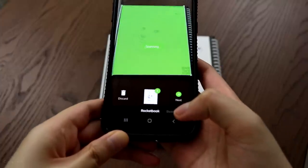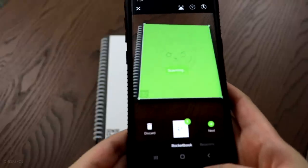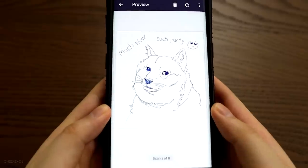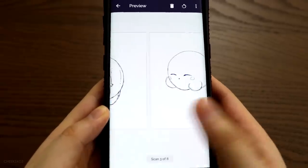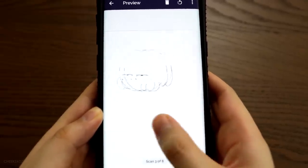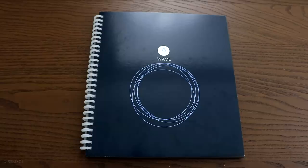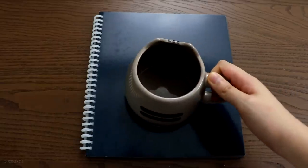To scan the pages, you have to download the Rocketbook app. You have to make sure that the entire page fits the camera frame and just one click and it scans to your phone and you can send it to your email, Google Drive, etc. Now it's time to erase everything, but good thing I have a digital copy.